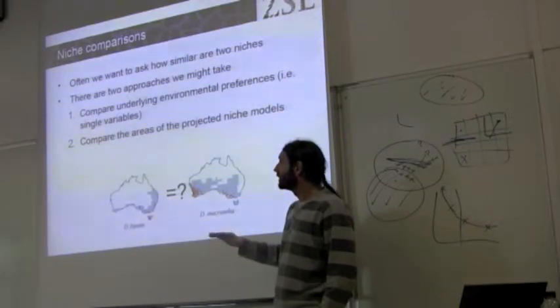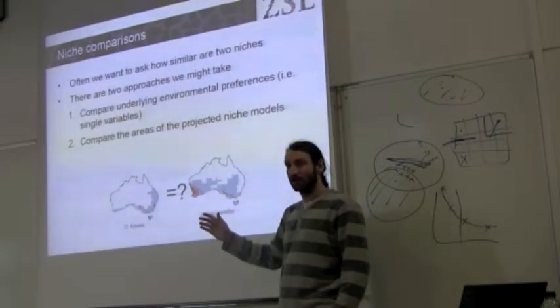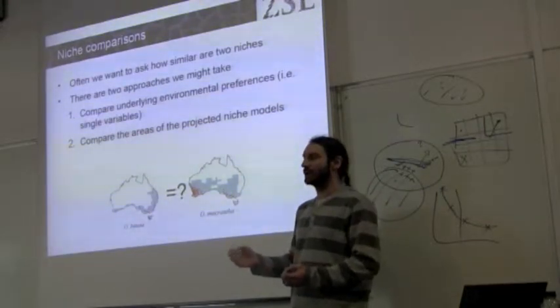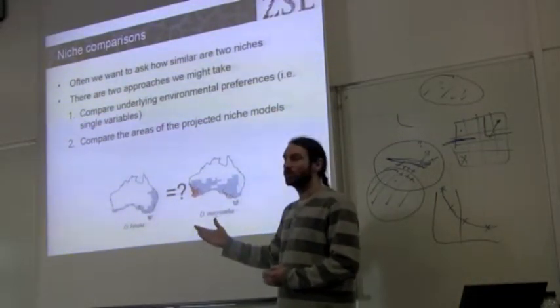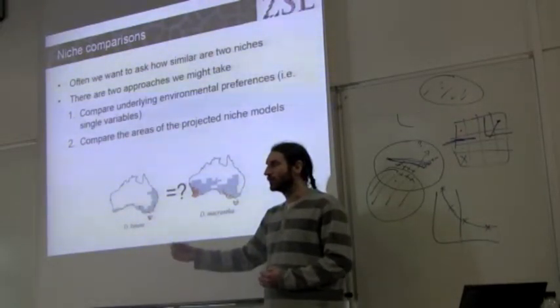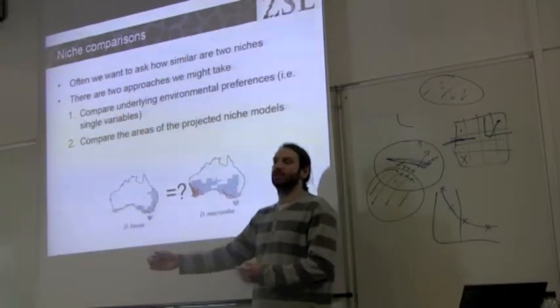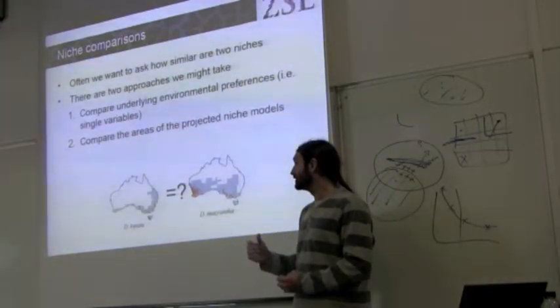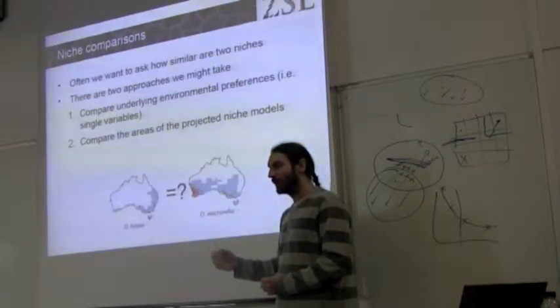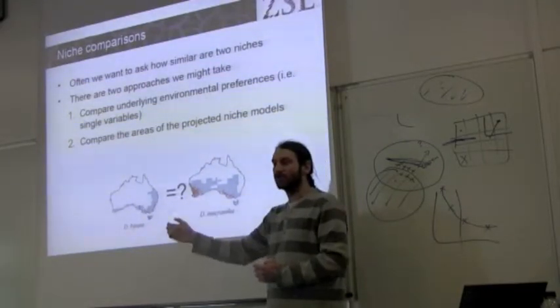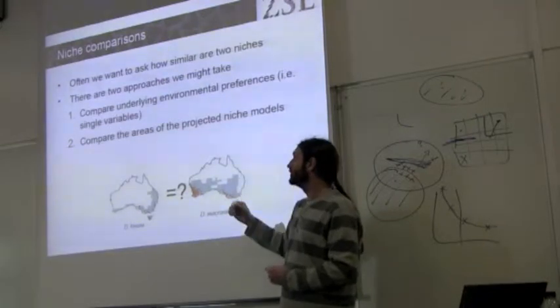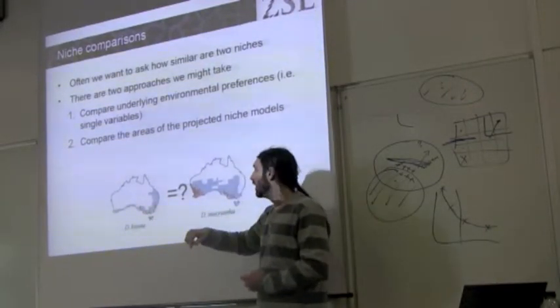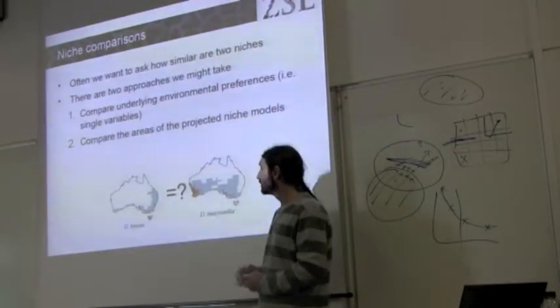Now, there's really two approaches to this sort of comparison, and the first is not to look at the niche model, but to look at the underlying data. So we might look at an individual variable to say, what is the temperature profile that we see for this species, and compare that to our other species. That's not looking at our niche as a combination of variables, but just looking at individual variables for each species. And then the second is to try to compare a full niche rather than just single variables. In this way we normally project that niche onto our geography and look at the areas that are selected as suitable between these two or multiple species.